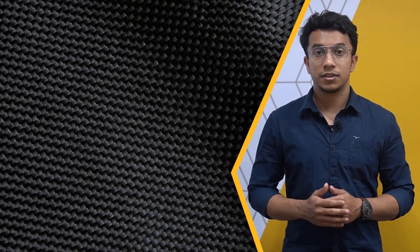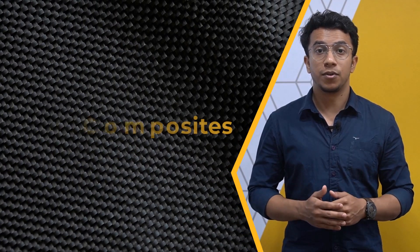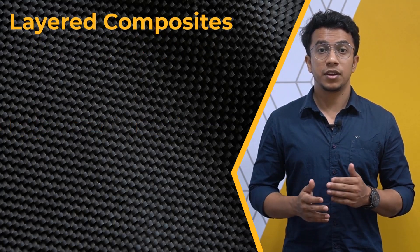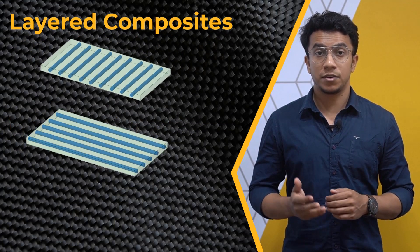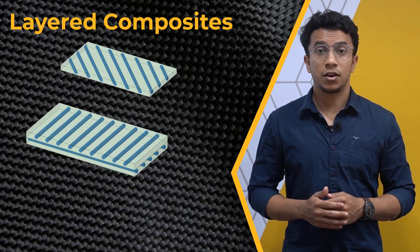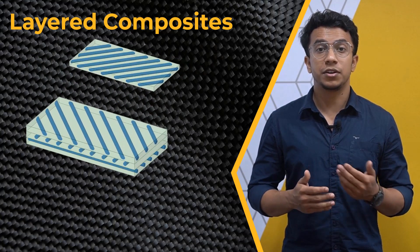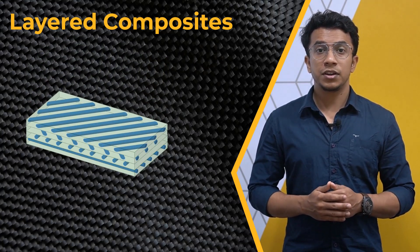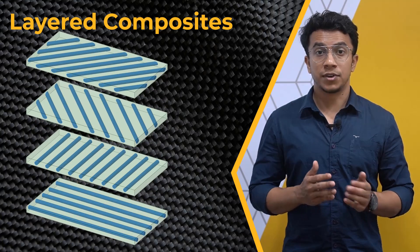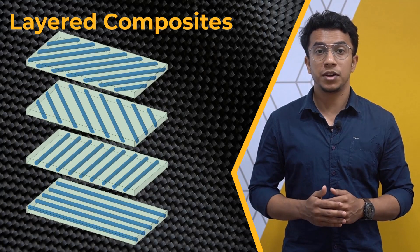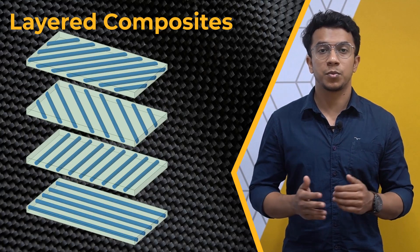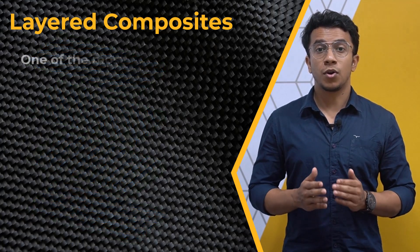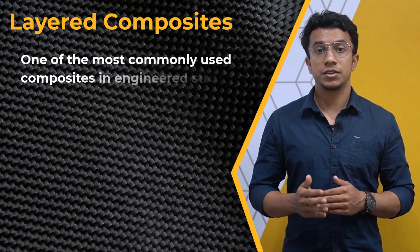Before we proceed, let's do a quick recap of what layered composites are. Layered composites are typically made of multiple layers of fibers and matrix, and can also include layers of other materials such as steel or homogeneous polymers. The orientation of the layers as well as the fibers can be modified to meet the required stiffness and strength properties. Layered composites are one of the most commonly used composites in engineered structures.